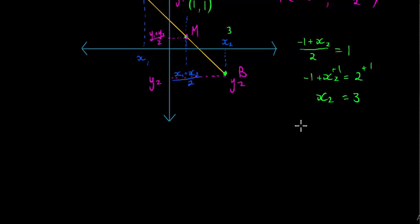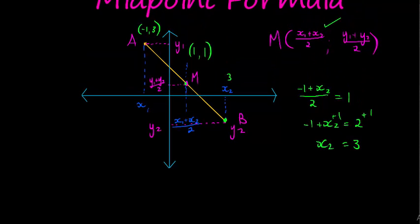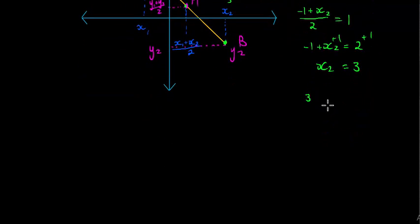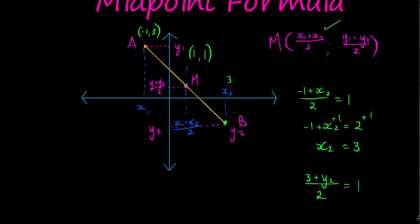Then same thing for Y. We have Y1 is 3, so 3 plus Y2 divided by 2 should equal 1. In other words, in this expression, I substituted my Y1 with a 3 and I substituted the whole expression equal to 1. So now I have an equation.